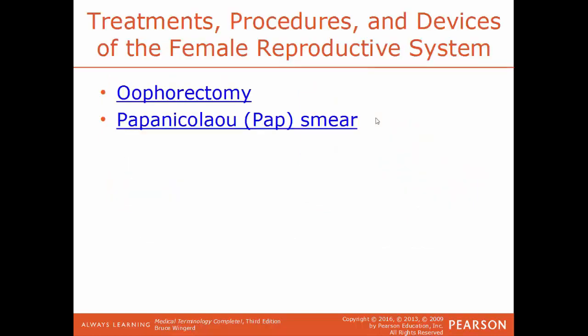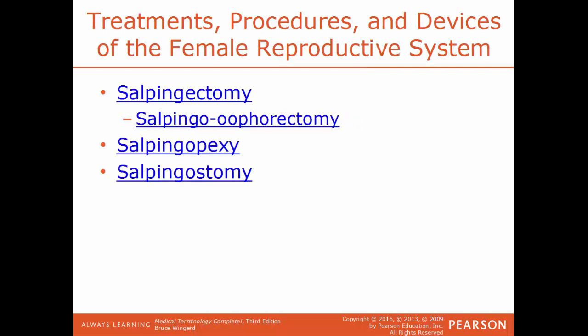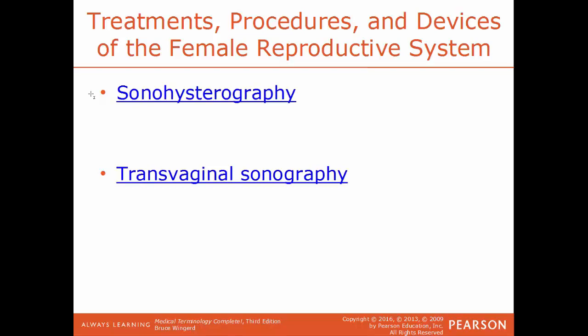Oophorectomy is the surgical removal of an ovary. A Papanicolaou smear, more commonly called a pap smear, is a diagnostic test to check for cervical cancers. Salpingectomy is the surgical removal of a fallopian tube. If you remove the fallopian tube and also the ovary, that leads to a salpingo-oophorectomy. Salpingopexy is the surgical fixation of a fallopian tube. Salpingostomy is the creation of an artificial opening into the fallopian tube, done to unblock it. Sonohysterography is a technique where fluid is injected into the cervix of the uterus and an ultrasound is used to show how well the fluid is being infused inside the uterus. Transvaginal sonography uses ultrasound to examine the uterus, ovaries, and cervix through the vagina.